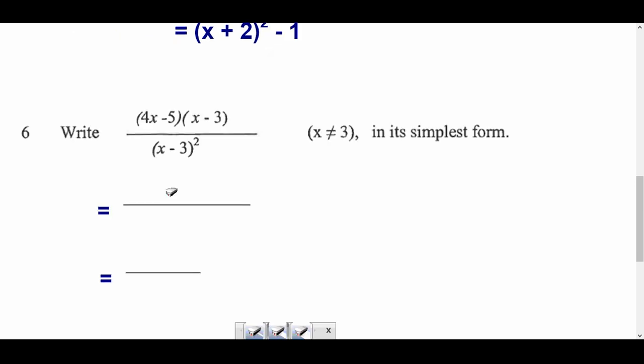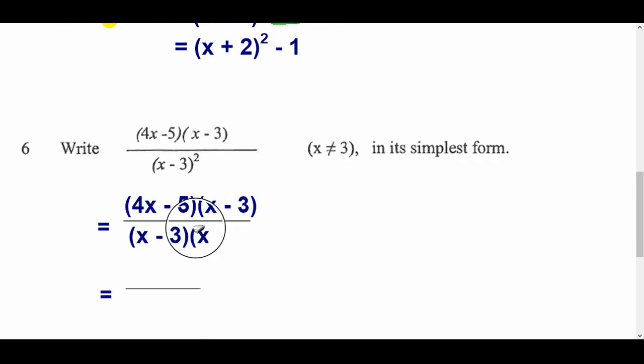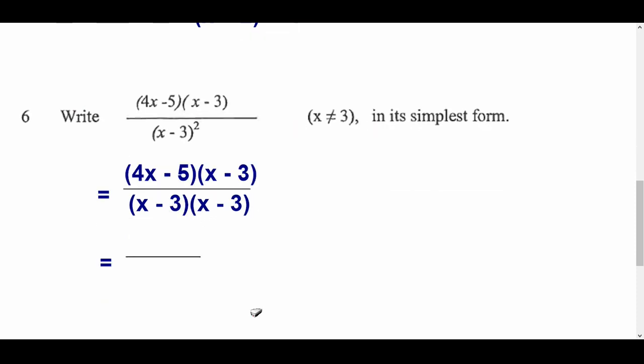Right, question 6. I would write the bottom bit out slightly differently because it's x minus 3 squared. This bit at the bottom, I'm going to write x minus 3, x minus 3 because there's a squared there. Now, it says write this in its simplest form. Watch what I can do now. Because it's been multiplied by the same thing top and bottom, I can divide by those two things. So, when you score out, you're really dividing. So, I get rid of that there because I divide by x, and I get rid of that there. And it leaves me with this, 4x minus 5, x minus 3.